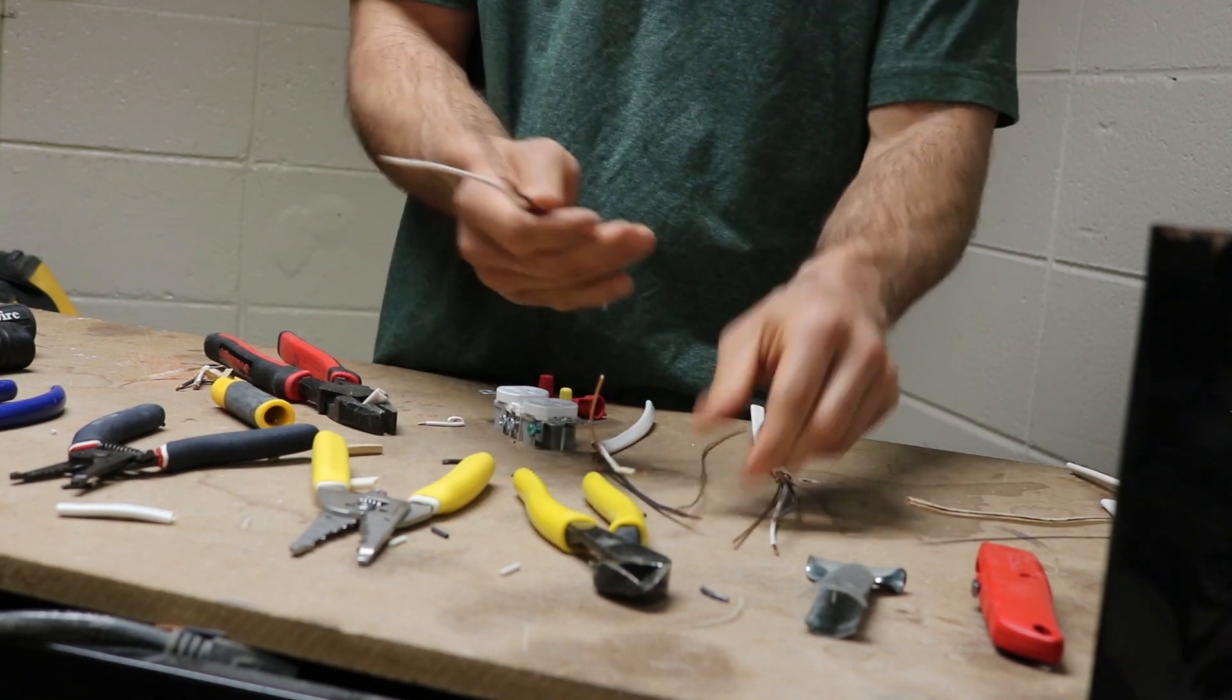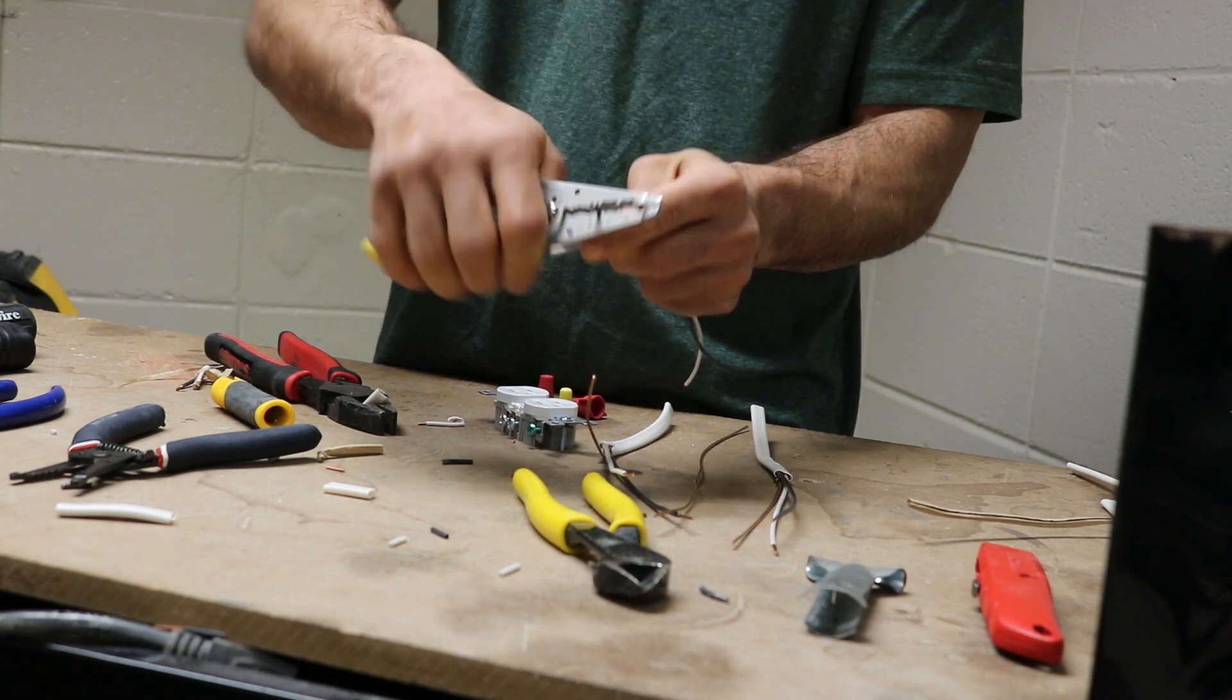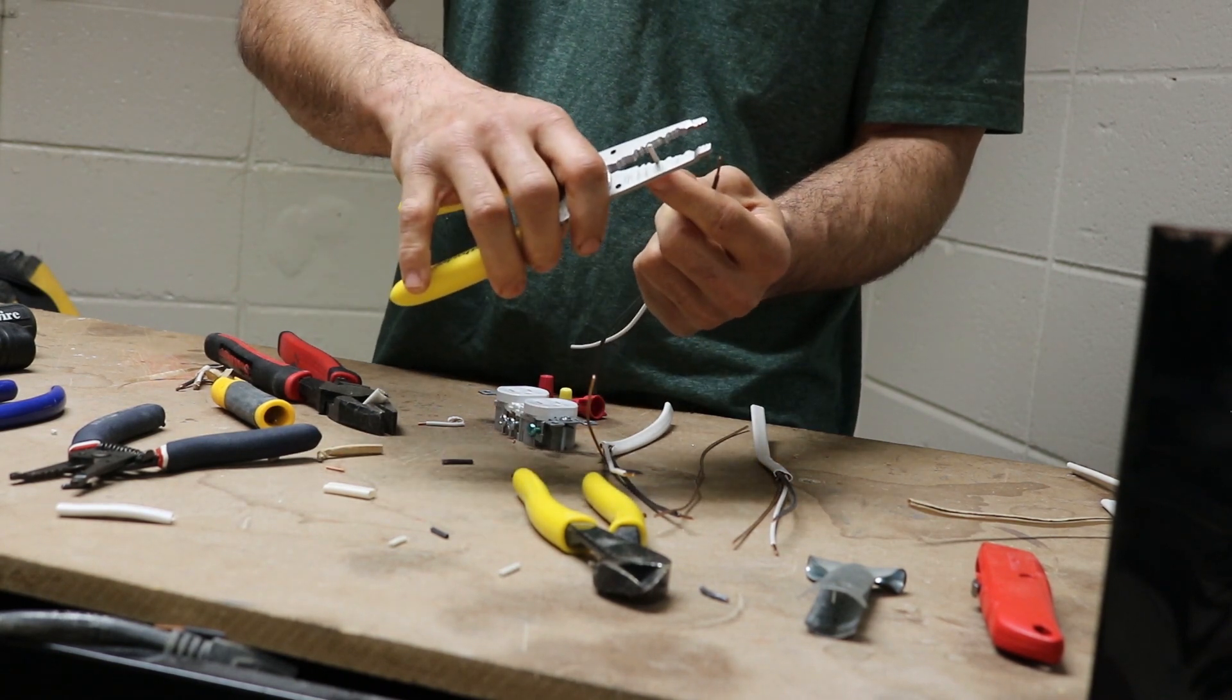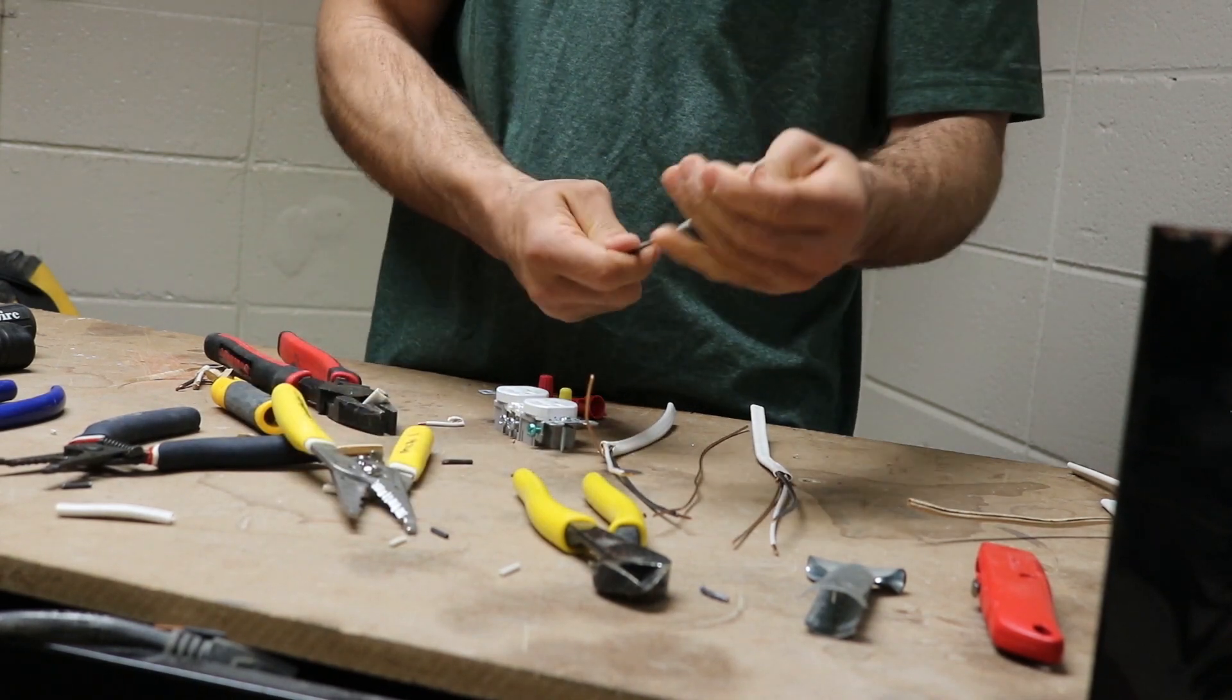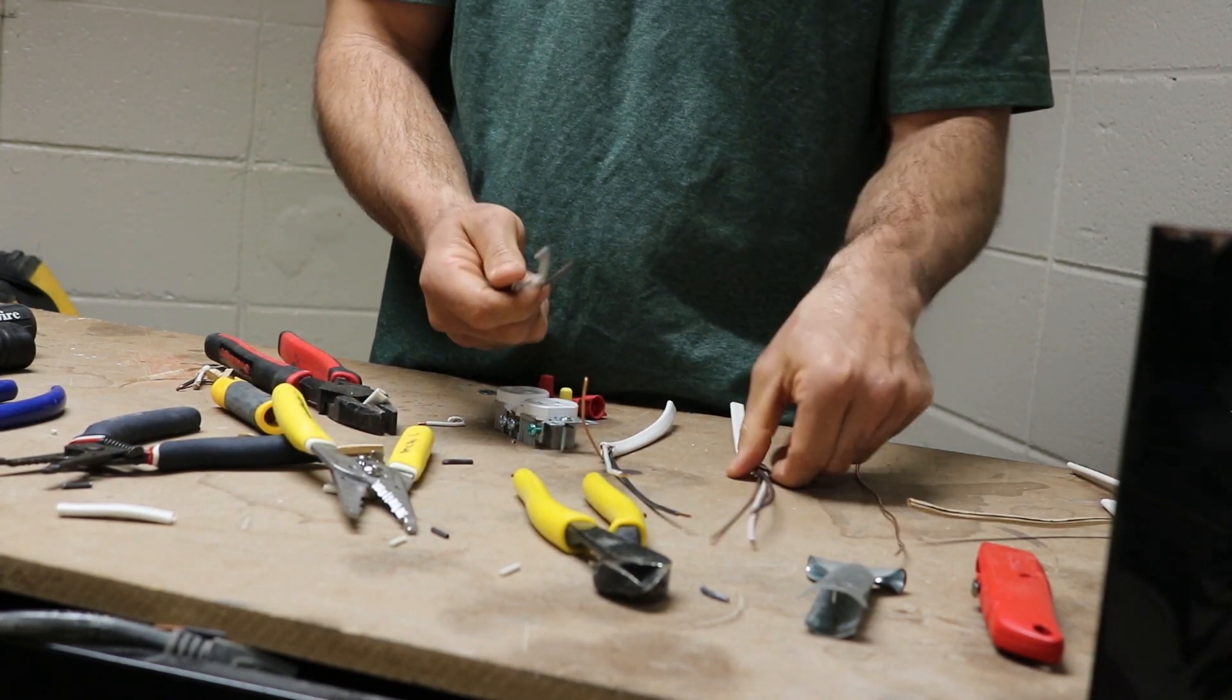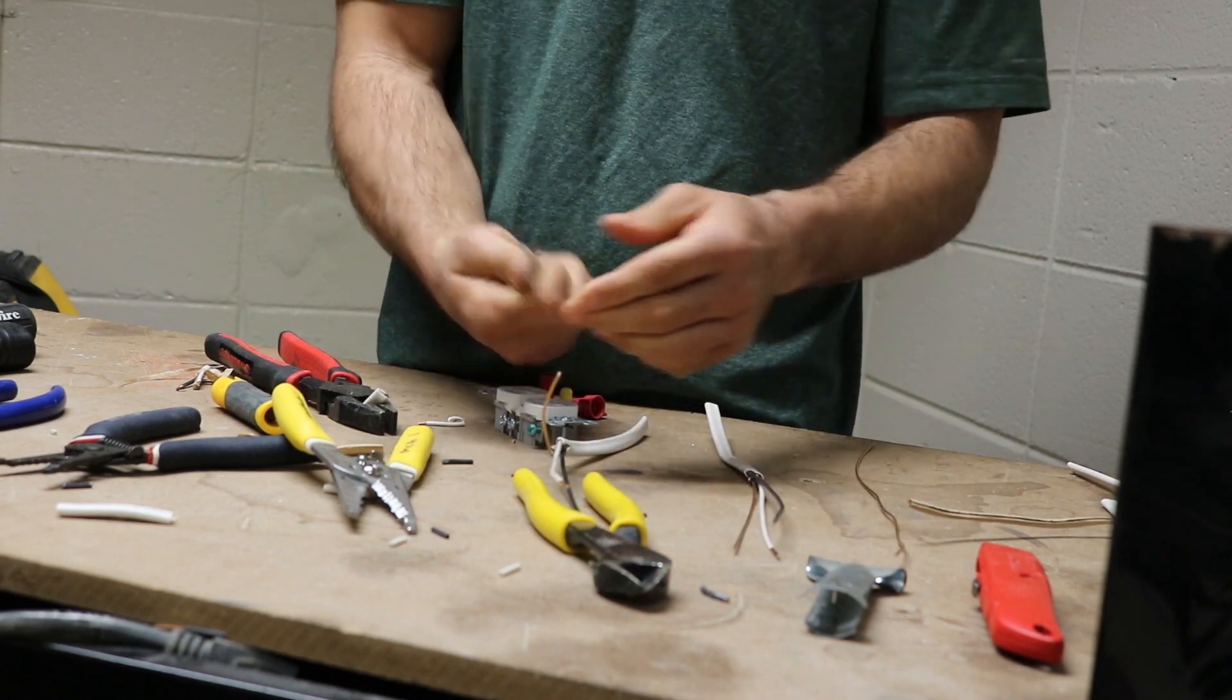So you are going to do the same thing you did previously. You're going to strip the ends of the wire off on your black and your white wire. So right now I got two cables and then my jumper wires.